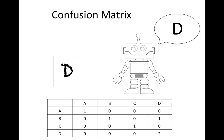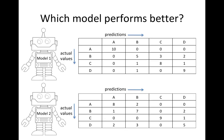So this table you just made is the confusion matrix, and today we will use this confusion matrix to measure the model performance. Here we have two models and their confusion matrices respectively.